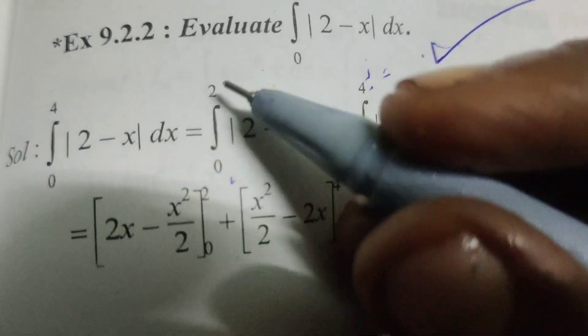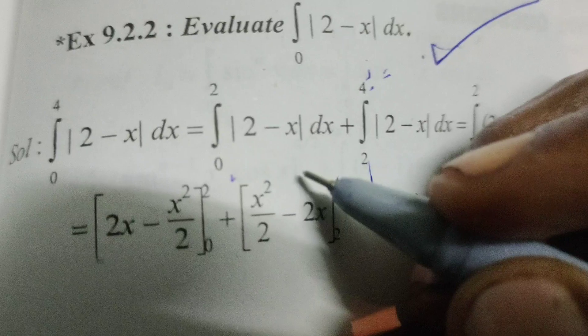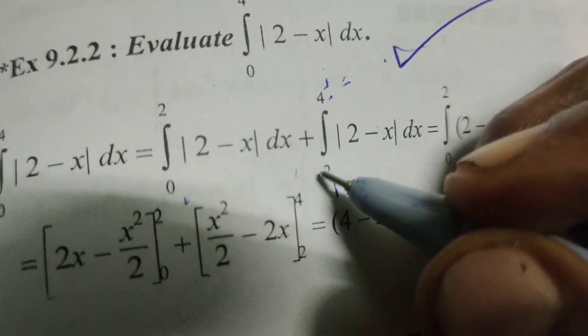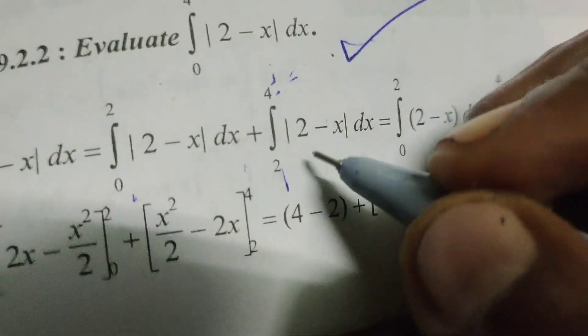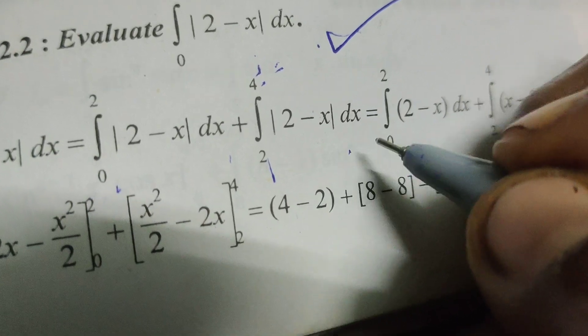So we have integral from 0 to 2 of |2 - x| dx plus integral from 2 to 4 of |2 - x| dx.